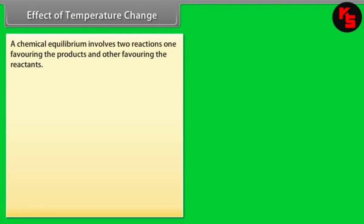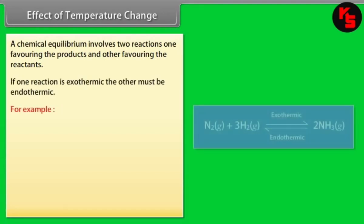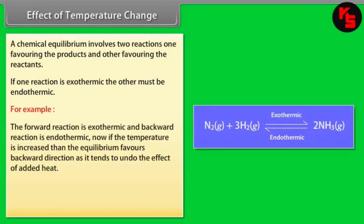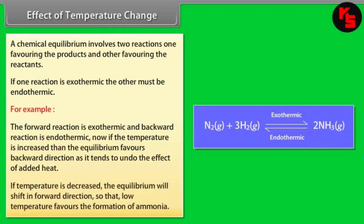Effect of Temperature Change. A chemical equilibrium involves two reactions — one favoring products and one favoring reactants. If the forward reaction is exothermic, the backward reaction is endothermic. If temperature is increased, the equilibrium favors the backward direction, tending to undo the effect of added heat. If temperature is decreased, the equilibrium shifts in the forward direction. Therefore, low temperature favors the formation of ammonia.